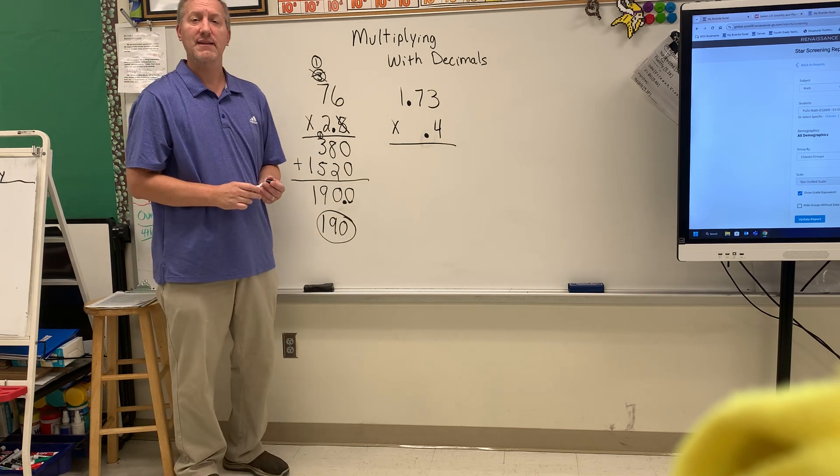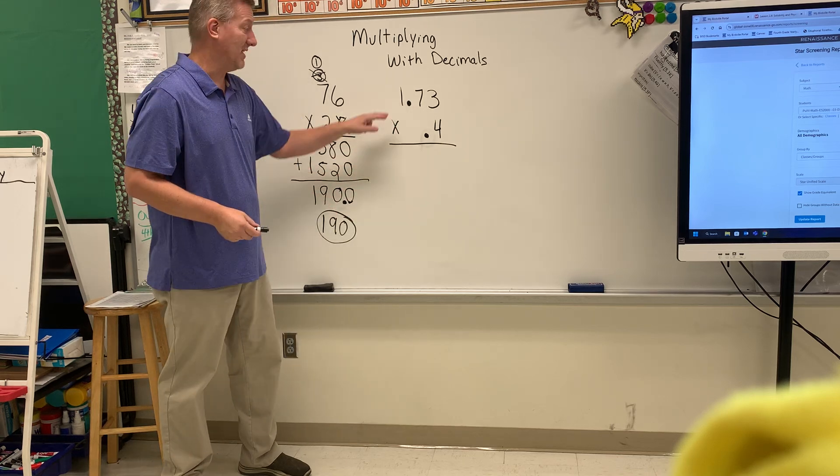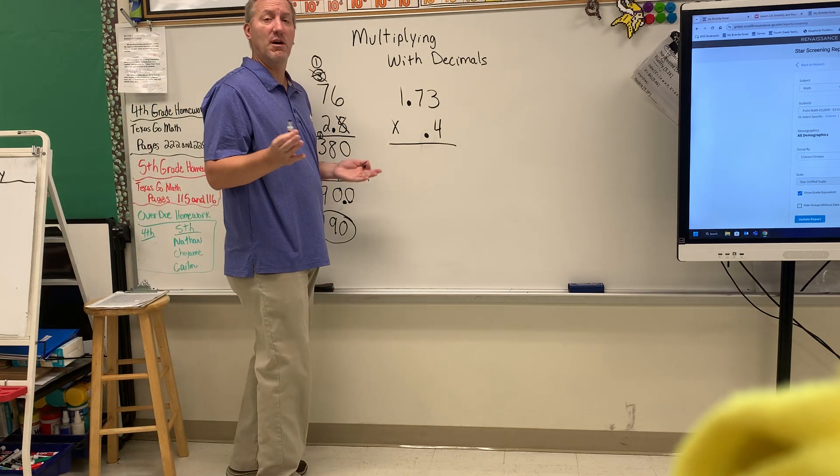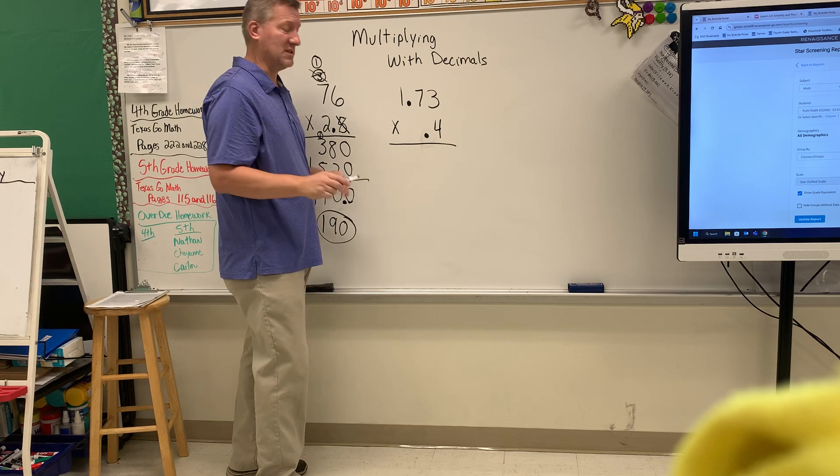All right that's the first one. Now what if you had decimals in both of the numbers? So again just multiply as normal, multiply as normal. Ignore the decimals to begin with.